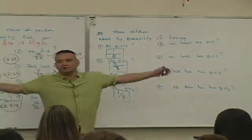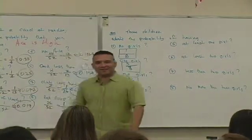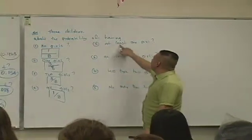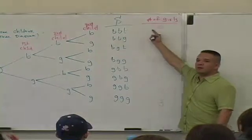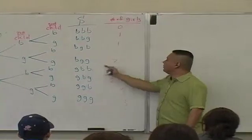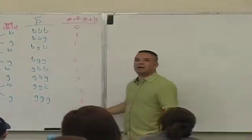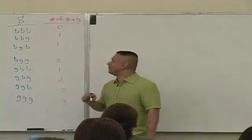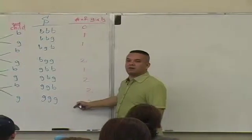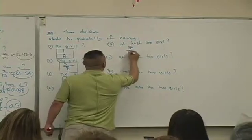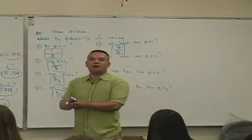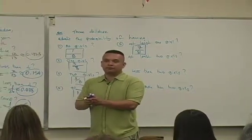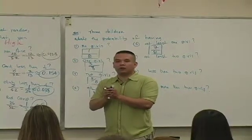Now, at least one girl. How many outcomes consist of having at least one? Going through the outcomes: zero girls, one, two, one, two, two, three. So seven outcomes consist of having at least one girl. The likelihood is seven over eight. Notice — at least one means one or more. So if you want to have daughters, when you have three children, the likelihood is seven over eight that you'd have at least one daughter.